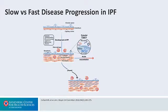Every patient with IPF is at risk of developing an acute exacerbation, but maybe about 10 to 15 percent of IPF patients will develop acute exacerbations. There might be various precipitating factors for an acute exacerbation, including acid reflux, various infections, mechanical factors such as stretch, and there's also anecdotal evidence that very high FiO2s might precipitate an acute exacerbation.